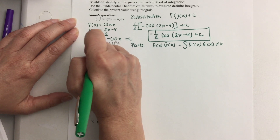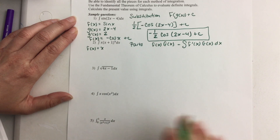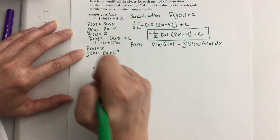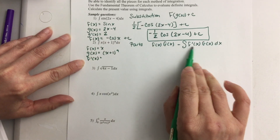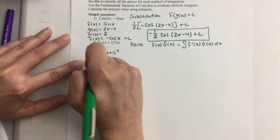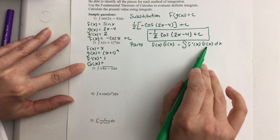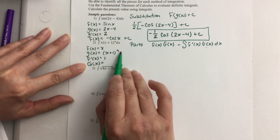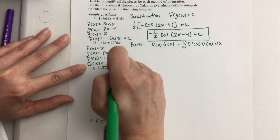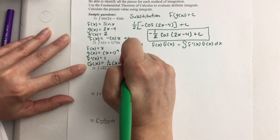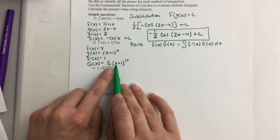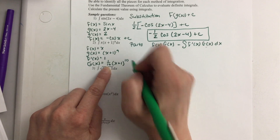Make sure you list all of the different pieces. This is similar to what you would have done for the product rule moving forward. So f of x is x — that's the first term. g of x is the second piece: x plus 1 to the power of 9. The derivative of f of x is 1. The antiderivative of g of x: take the current exponent 9, add 1 to get 10, divide by 10 — so it's one over 10 out front — and you keep the parentheses the same to the power of 10. The derivative of the inside is 1, so it's not going to change anything.